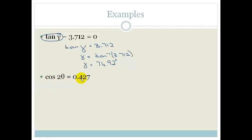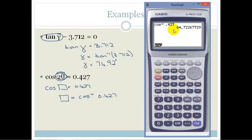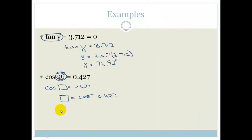This time we've got cos 2 theta is equal to 0.427. So what we're first going to do is pretend that this is just one big angle. We could say we've got cos of a block is equal to 0.427. Therefore that block is equal to second function cos of 0.427. Don't be freaked that you've got 2 theta. Just think of it as one big angle, which we're calling a big block. So shift cos of 0.427, and that is 64.72. Therefore the block is equal to 64.72 degrees.